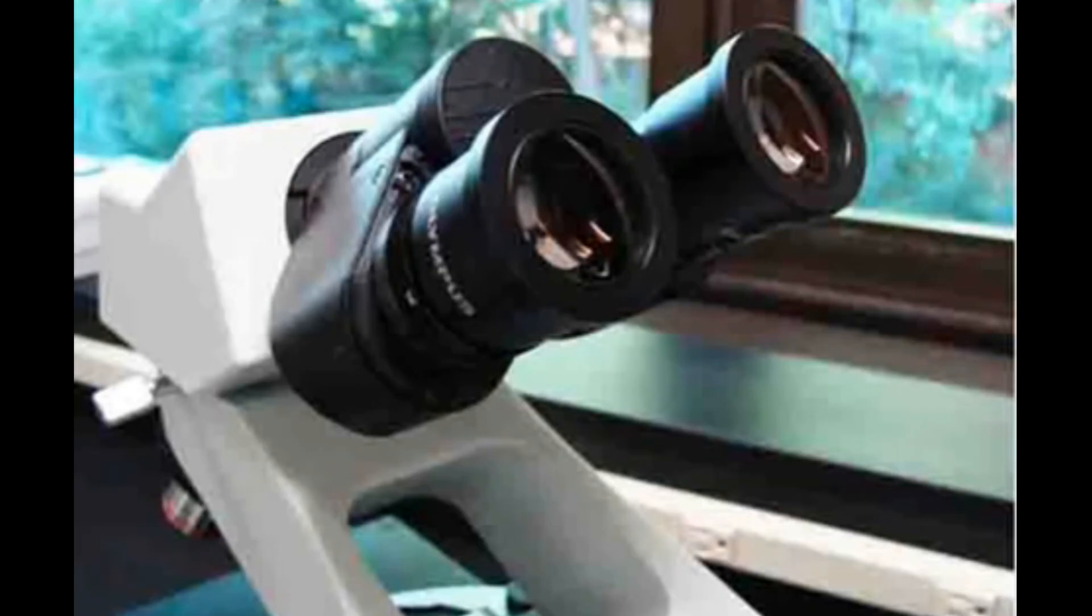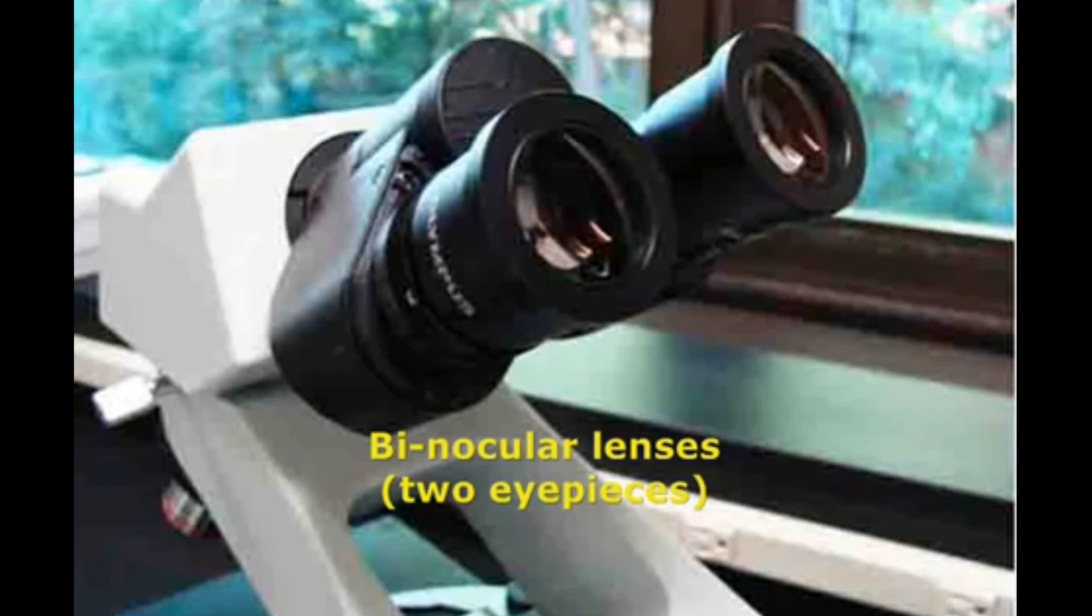Compound microscopes have either a single ocular lens or a set of binocular lenses. The ocular magnifies the specimen ten times actual size.